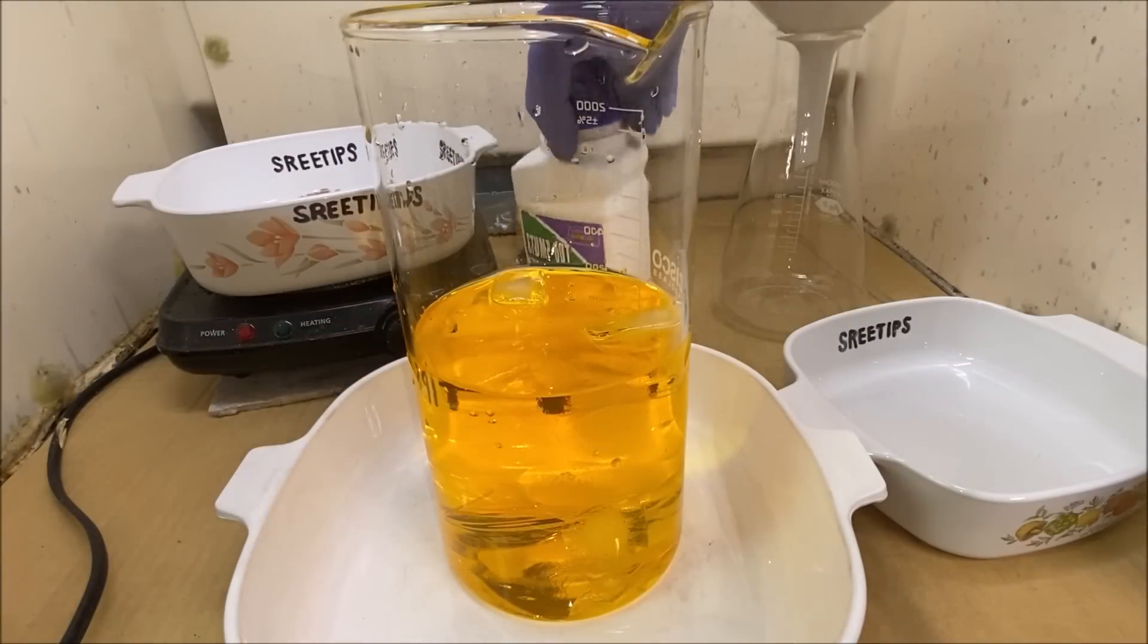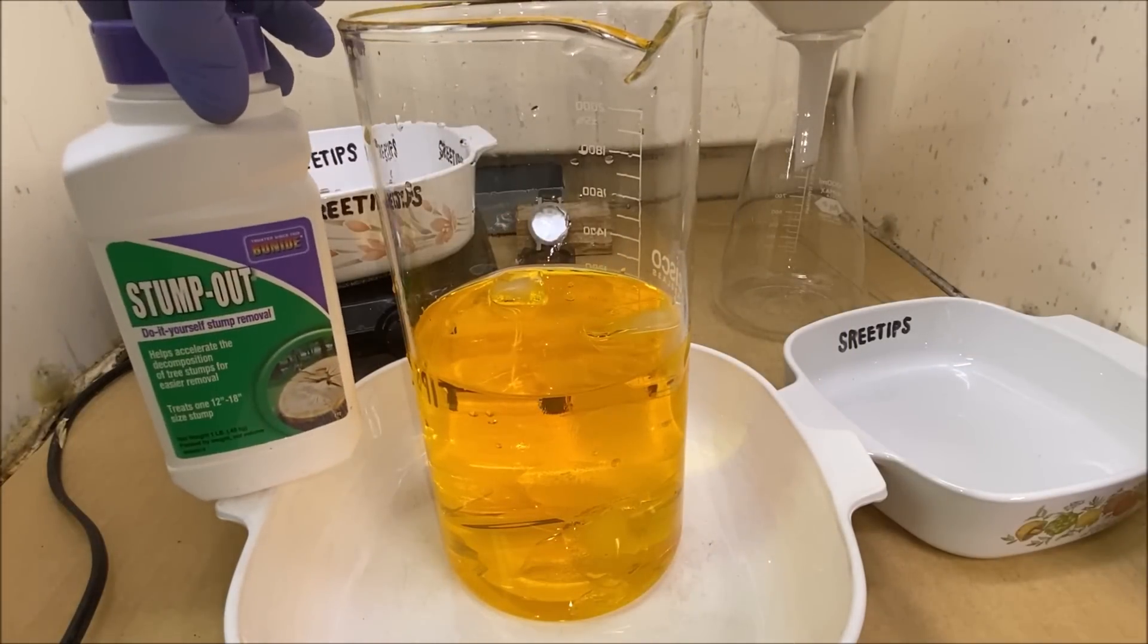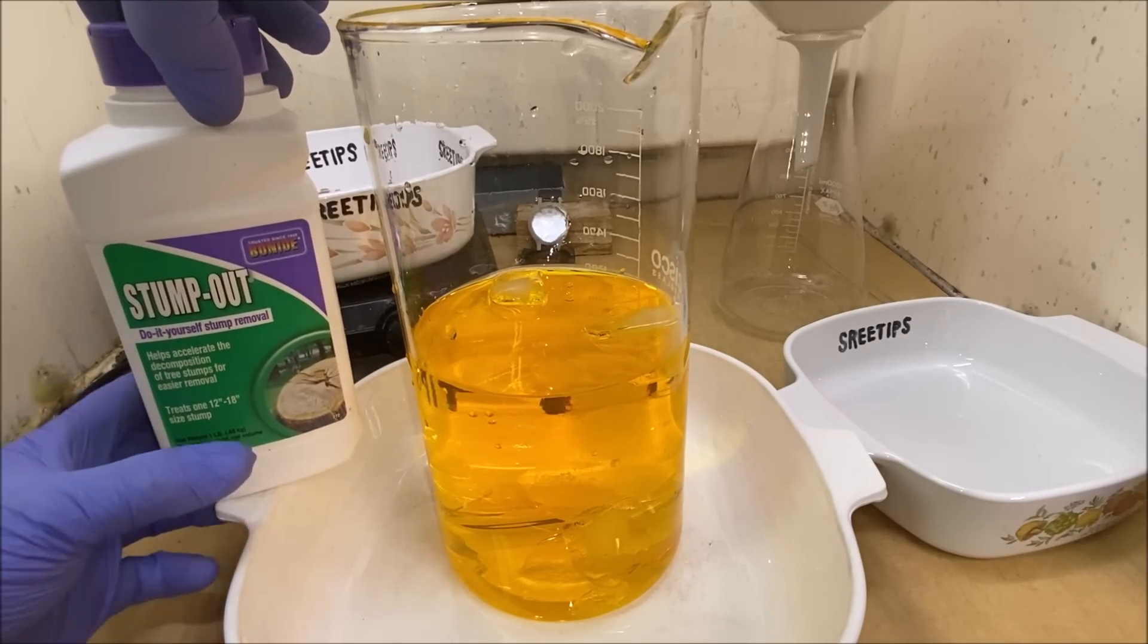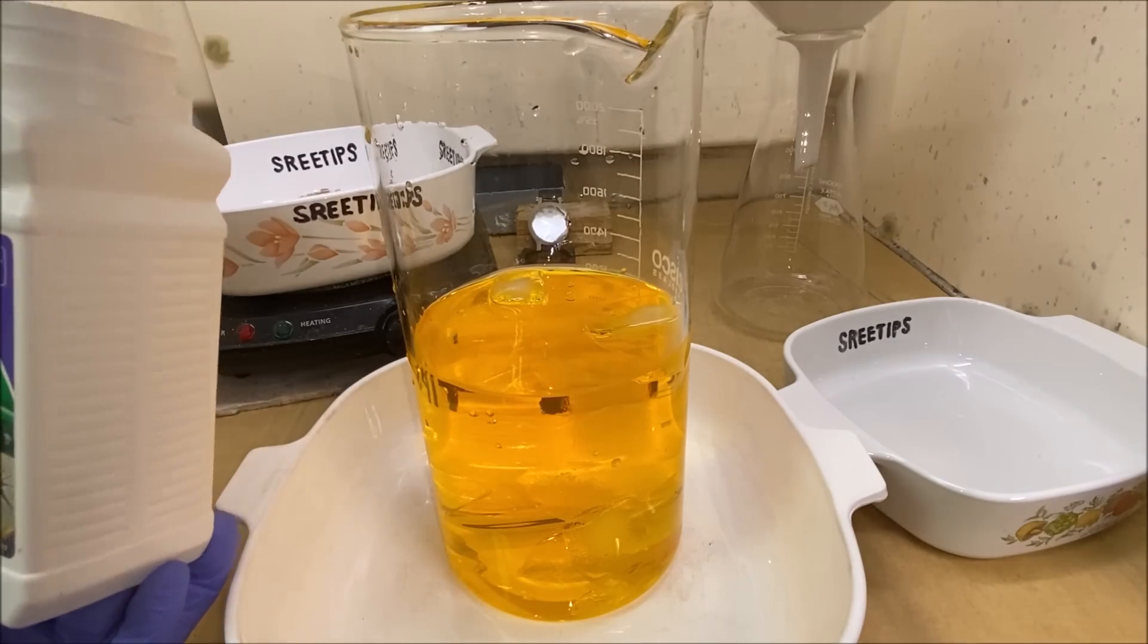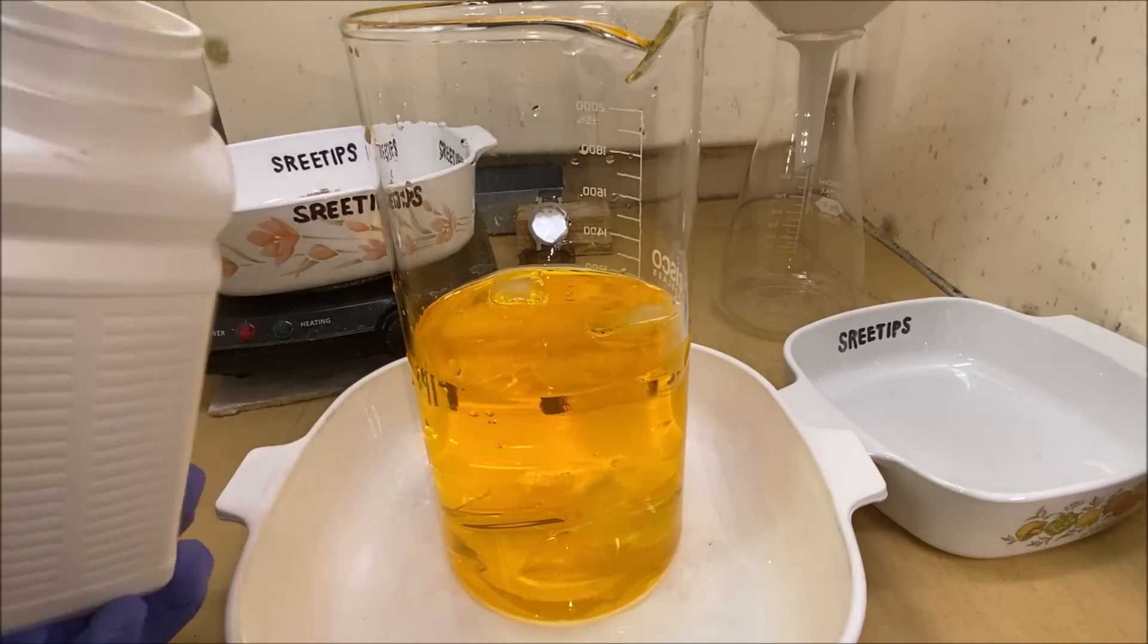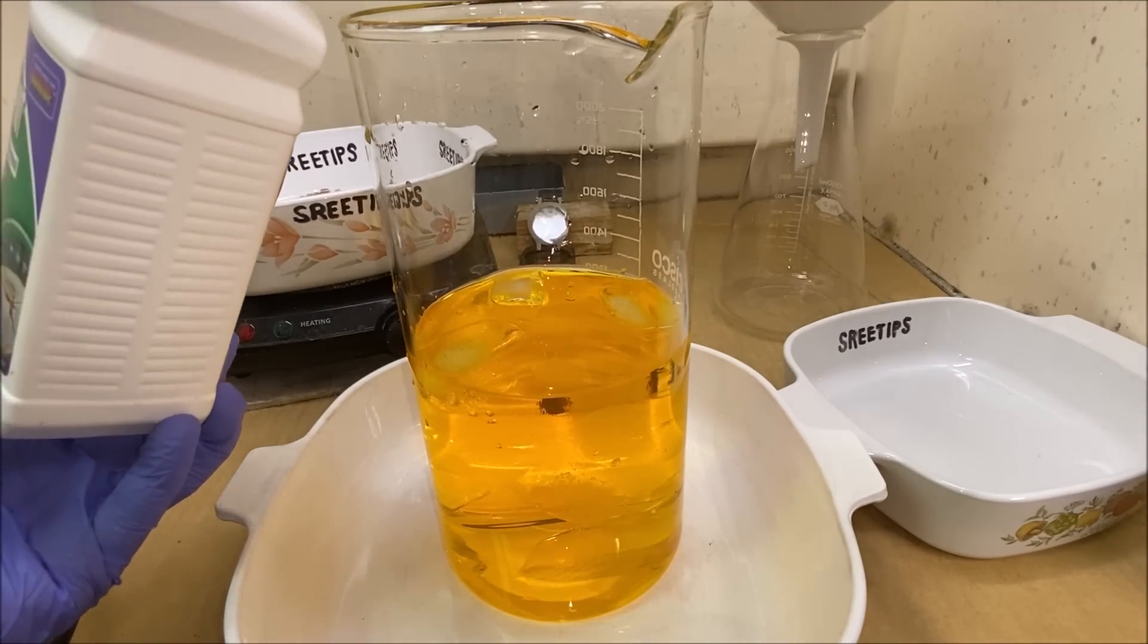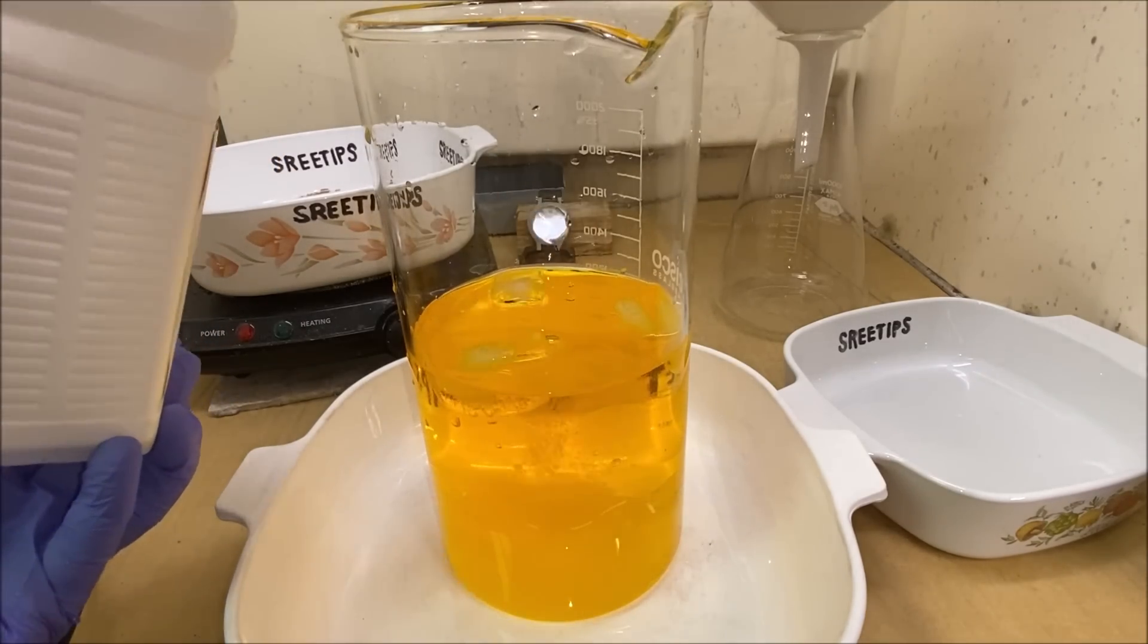Now we're going to add some stump out. Stump out by Bonide, this is sodium metabisulfite. We're going to add this in and precipitate the gold. Here we go, should be about an ounce in here is what I'm guessing.